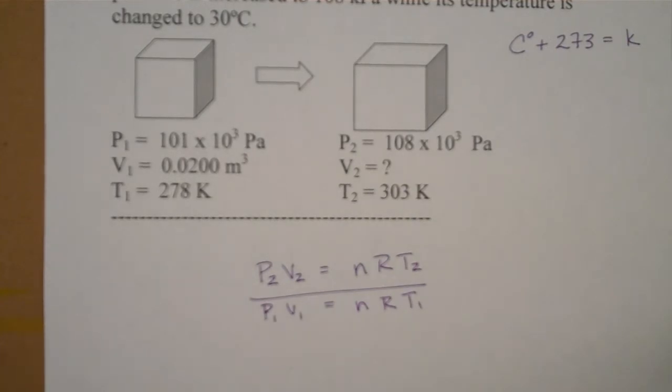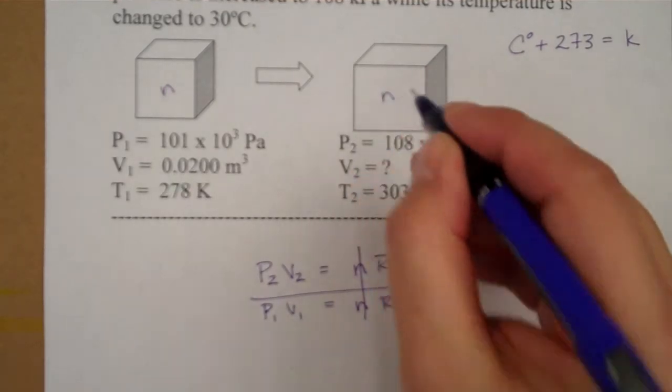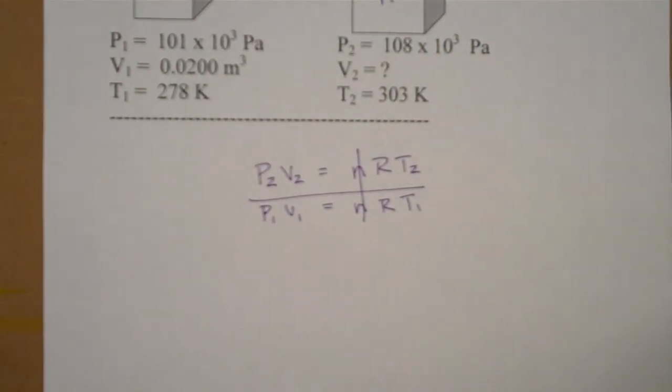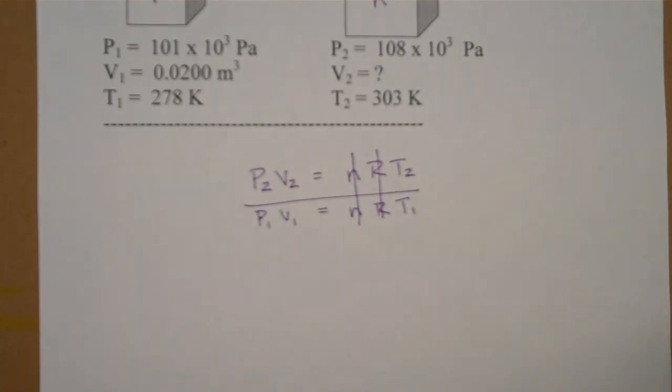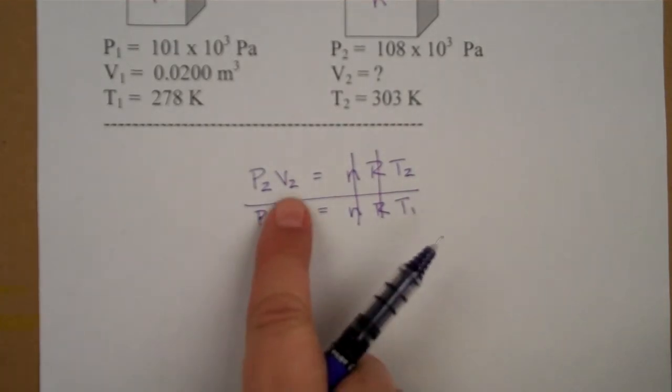Now in this case the only thing we'll be able to cancel is the number of moles. This is a closed system, so the number of moles in the before picture and after picture is the same. Universal gas constant is the same and we're looking for what V2 is.